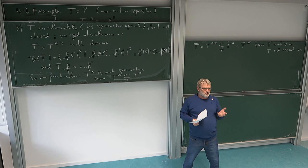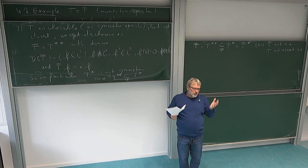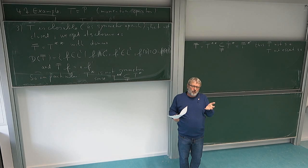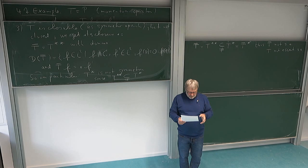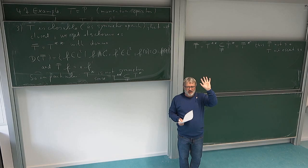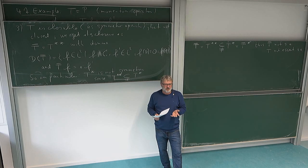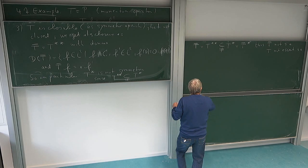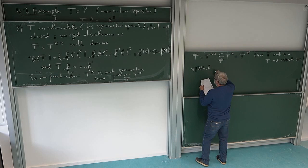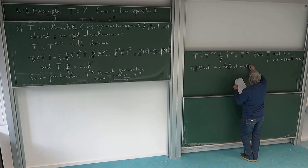So we started from operator T, which is symmetric. We take the closure, and the closure improves some things — namely it makes the domain bigger, as big as possible for dealing with differentiability — but it doesn't move us to a self-adjoint operator. So we still have to think: are there actually self-adjoint extensions of this operator? Maybe we should look at the defect indices, because they contain this information. So what are the defect indices of our operator T?